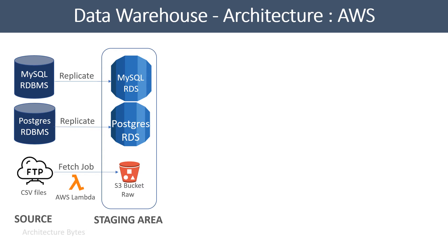This is a matter of configuration. To extract files from the FTP server and load them into the S3 bucket, we use an AWS Lambda function which executes at regular intervals to do its job. As you can see, the staging area contains raw, unprocessed data.